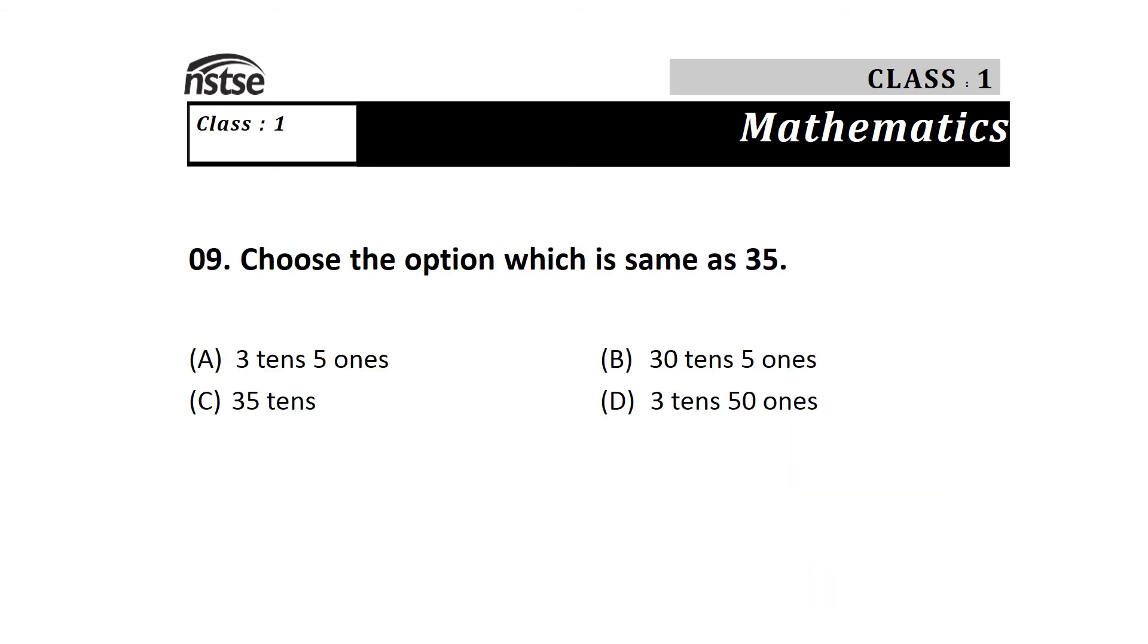Question 9: Choose the option which is the same as 35. 35 means 3 tens and 5 ones. The options are A) 3 tens 5 ones, B) 30 tens 5 ones, C) 35 tens, and D) 3 tens and 50 ones. So 35 equals 3 tens and 5 ones, the answer is option A.